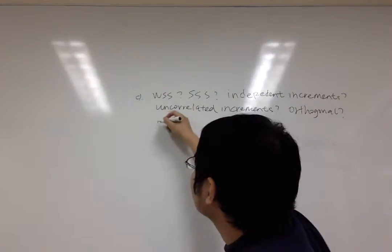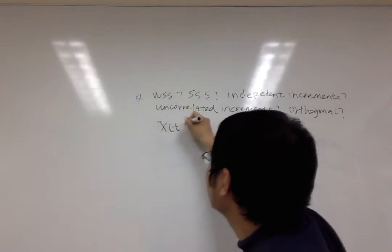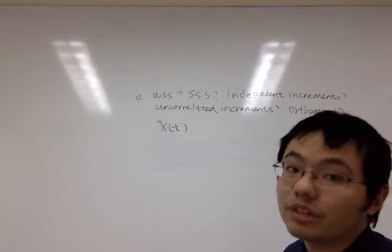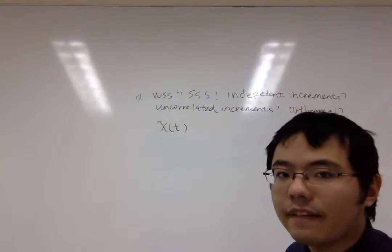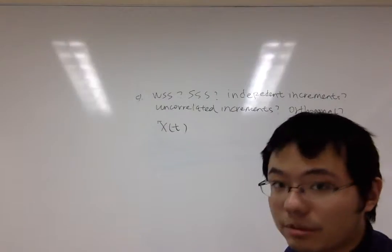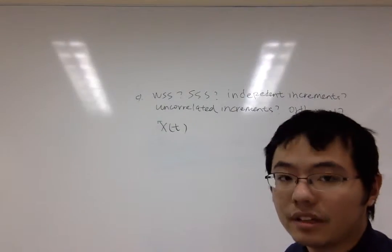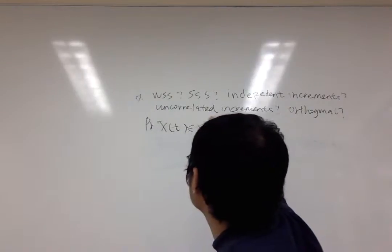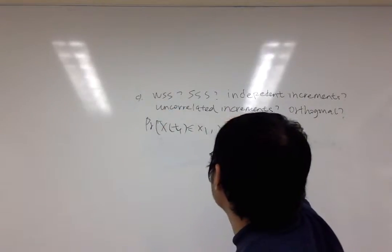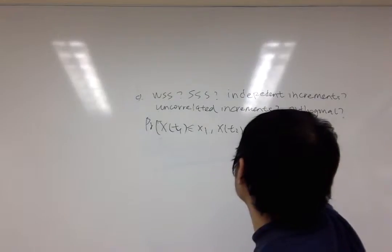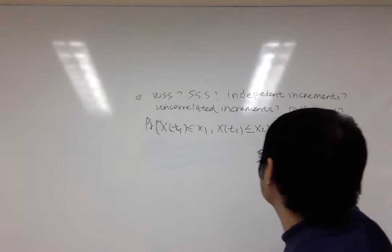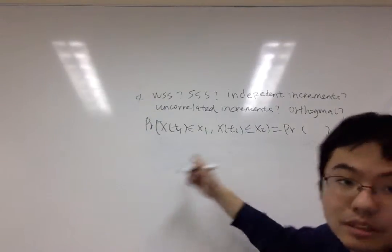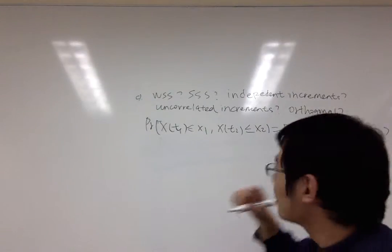We know that Xt can be considered as sort of an increment of the Wiener process. We already know that the Wiener process has independent increments, which means that the probability can be written as the product of the two probabilities.